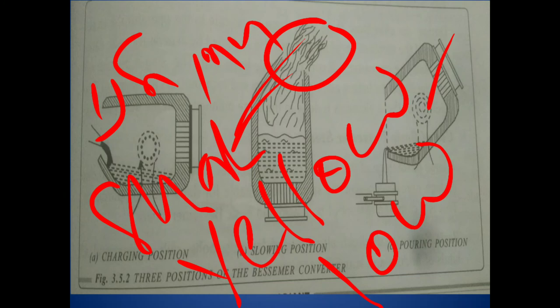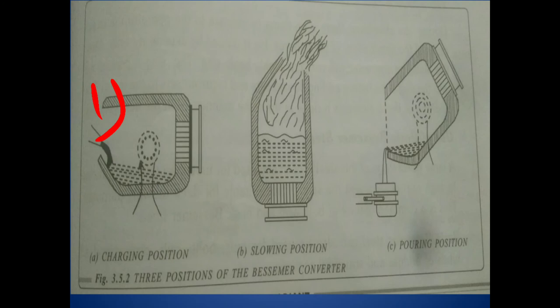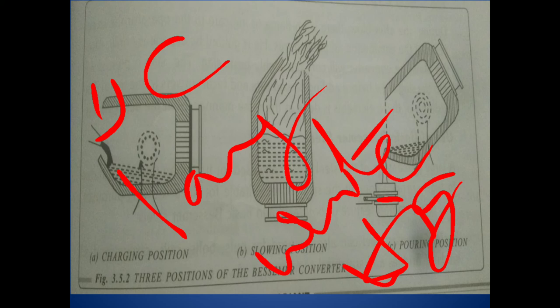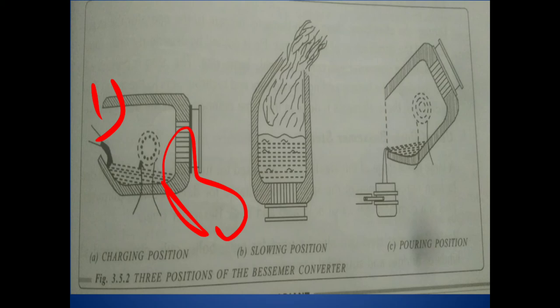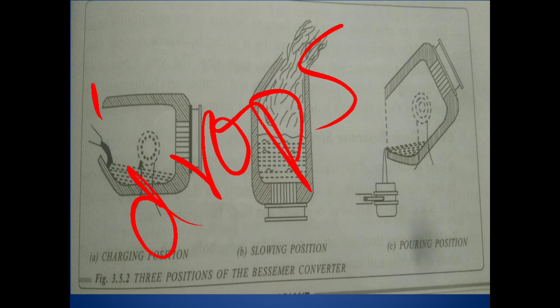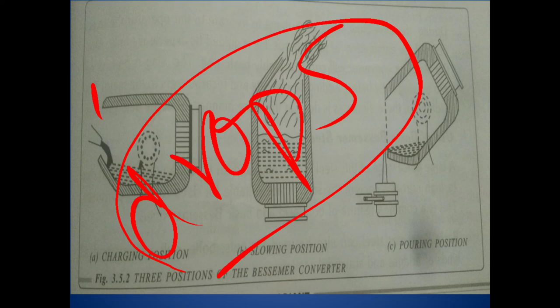When carbon is being oxidized — the decarbonization stage — the flame becomes long, white in color, and has high luminosity. At the end, when decarbonization is complete and silicon, manganese, and carbon are all oxidized, the flame turns brown in color or drops down. When the flame drops or turns brown, we conclude that all impurities — silicon, manganese, and carbon — present in the molten pig iron have been eliminated, and we proceed to the pouring position.